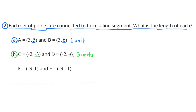Part B: Point C has coordinates negative 2 and negative 3, and point D has coordinates negative 2 and negative 6. Their x-coordinates are both negative 2, but their y-coordinates are different. The difference between negative 3 and negative 6 is 3 units, so the line segment is 3 units long.